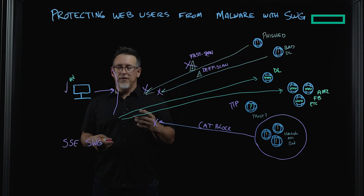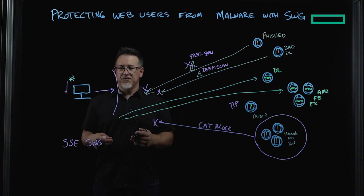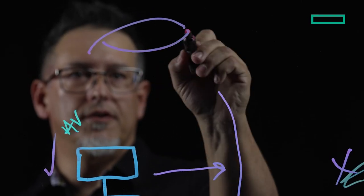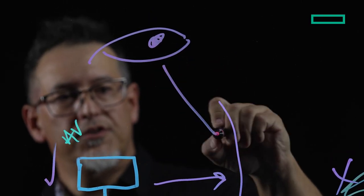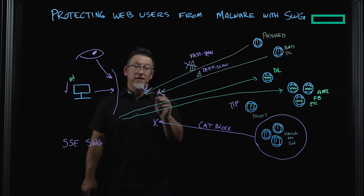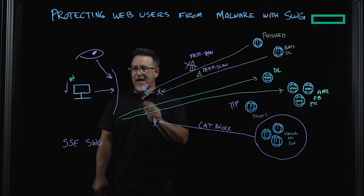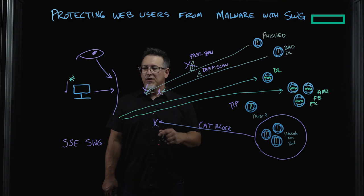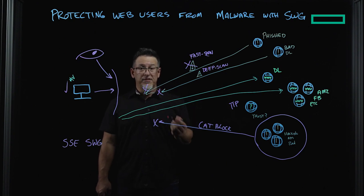Finally, and probably one of the most important aspects of SSE SWG is being able to holistically view the traffic and activity of what a user is doing. Having a complete view of what users are accessing and what their experiences is vital for creating a continuously adapting approach to the continuously shifting threatscape.